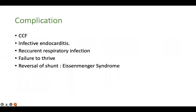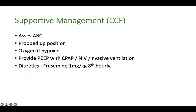Complications of PDA include congestive cardiac failure, failure to thrive, recurrent respiratory infection, infective endocarditis, and pulmonary arterial hypertension, finally leading to reversal of shunt or Eisenmenger syndrome. It is because of the risk of infective endocarditis that one often proceeds to PDA closure.